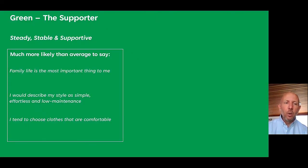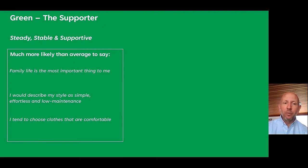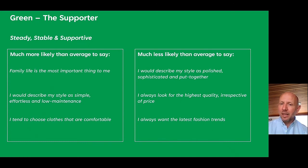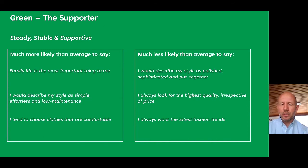Our greens — who we hoped would come out as steady, stable, and supportive — absolutely were. 'Family life is the most important thing to me' was what they most over-indexed on. They described their style as simple, effortless, and low maintenance, and said they choose clothes that are comfortable. They were the least likely to say their style is polished and sophisticated, or that they look for the highest quality — remember, they're all about other people, not themselves — and the least likely to want the latest fashion trends.